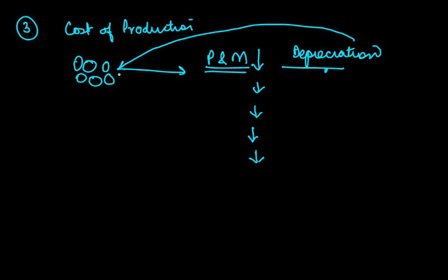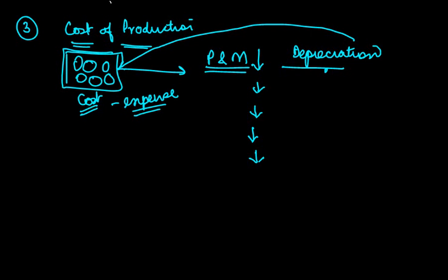And it is actually nothing but a kind of cost or an expense. Therefore, to arrive at the true cost of production of these goods - I mean cost of production is nothing but the cost incurred in producing a certain set of goods - so to produce these goods, one of the other costs that you are incurring is depreciation. Therefore depreciation is also provided because it helps you to ascertain the true cost of production of goods.